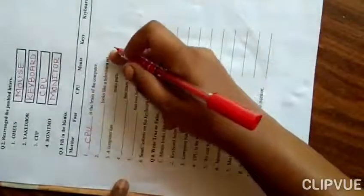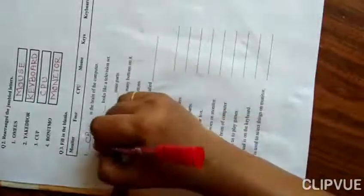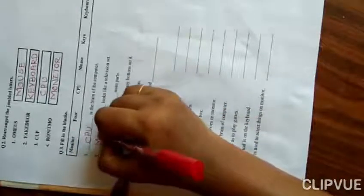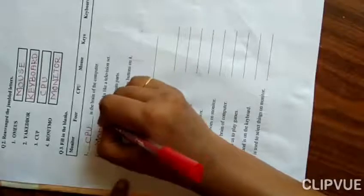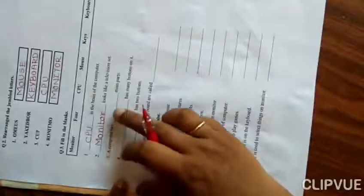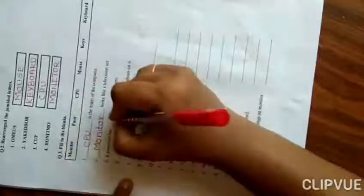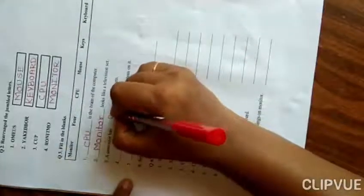Next, blank looks like a television set. What does look like a television set? Monitor. Monitor looks like a television set. Next, a computer has blank main parts. How many parts does a computer have? The answer is four. Write down F-O-U-R. Four.